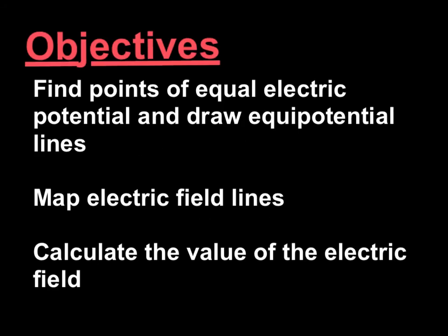This lab has three main objectives. First, you're going to find points of equal electric potential, and it's going to look like a bunch of dots. Then you're going to draw equal potential lines — this is like playing connect the dots. And then from there, you're going to map the electric field. Finally, you're going to get quantitative values for the electric field at different points along your drawing.